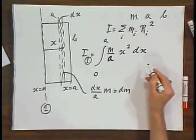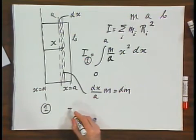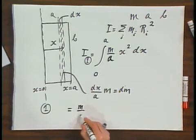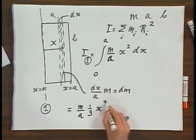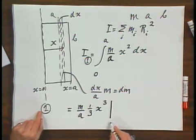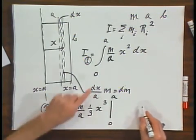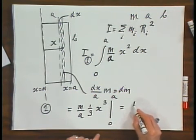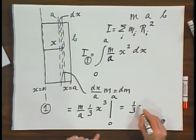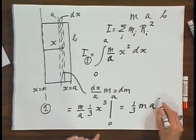This is not a very difficult integral. It becomes M over A times one-third x to the third, evaluated between zero and A. So this becomes one-third M times A squared.